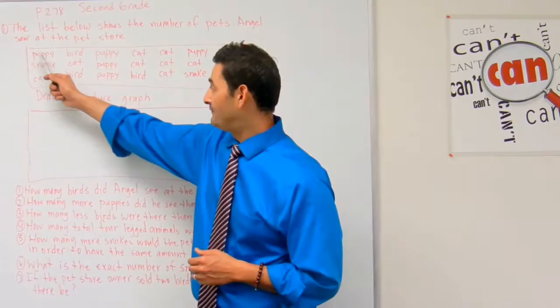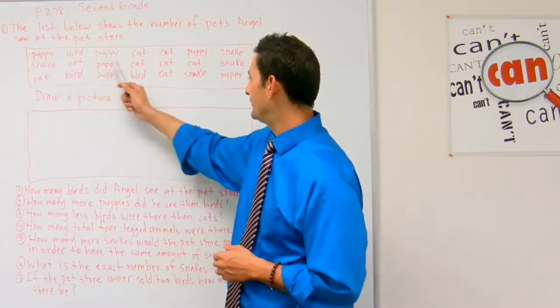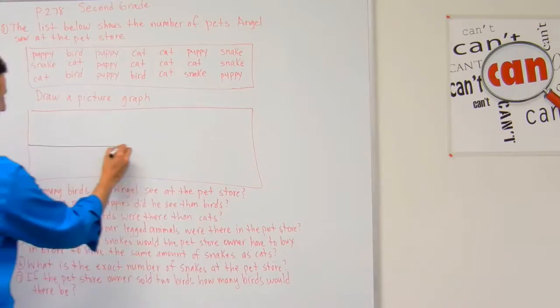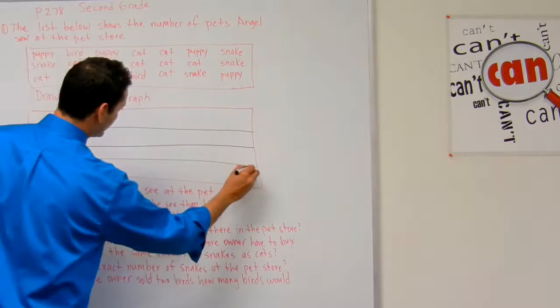So here I have puppy, snake, cat, and bird — just puppies, snakes, cats, and birds. So what I'm going to do, since I have four categories, I'm going to split that down the middle, split that down the middle, and split that down the middle here.